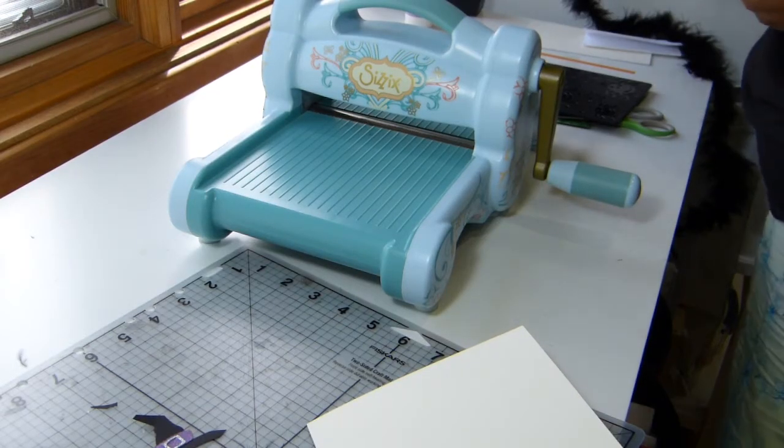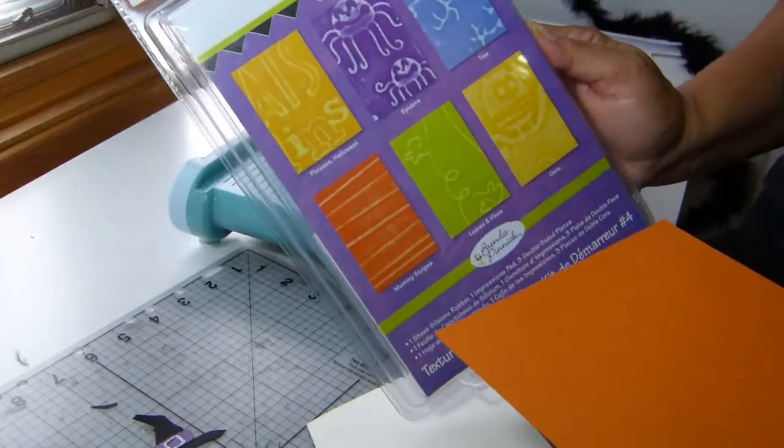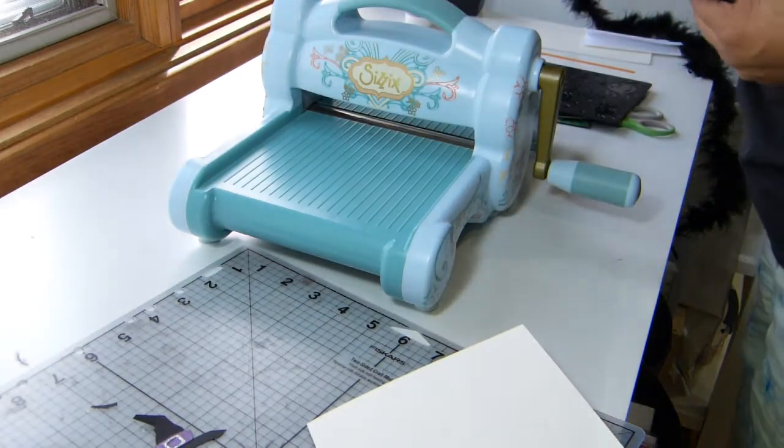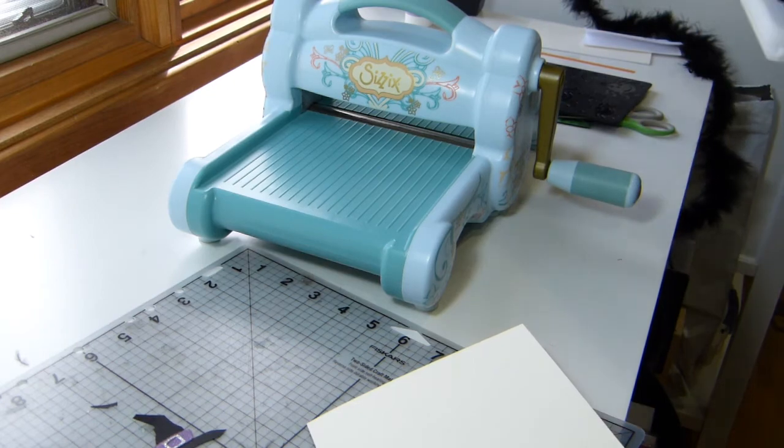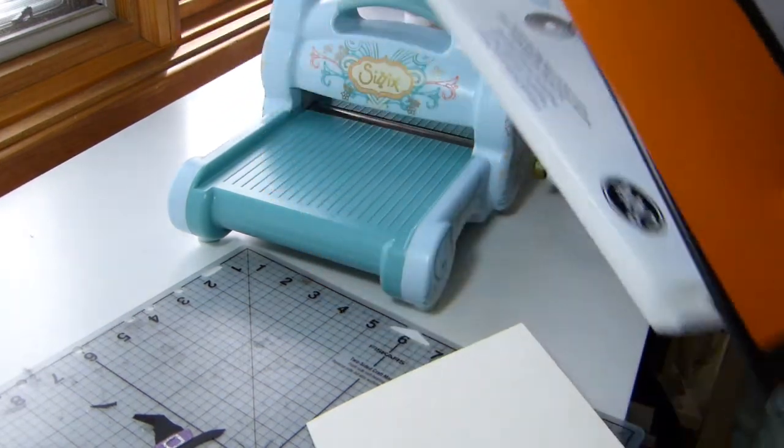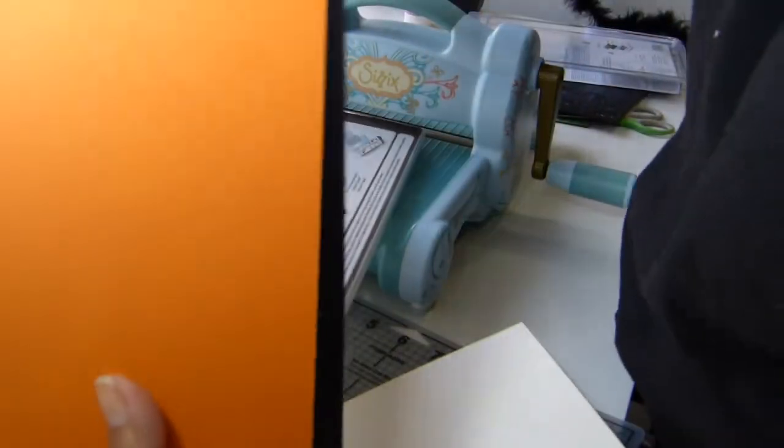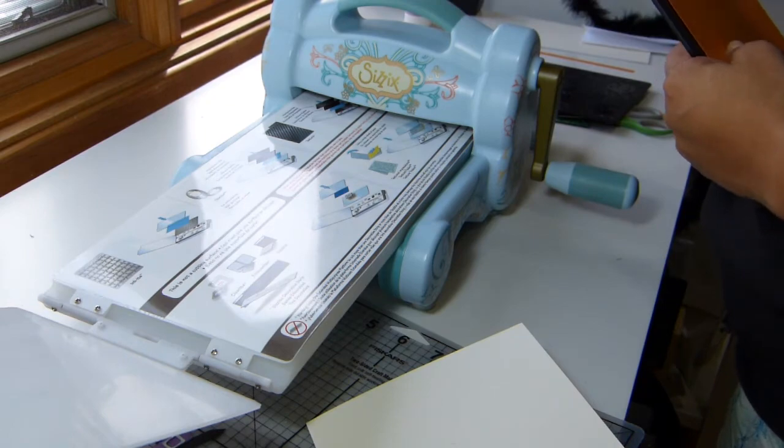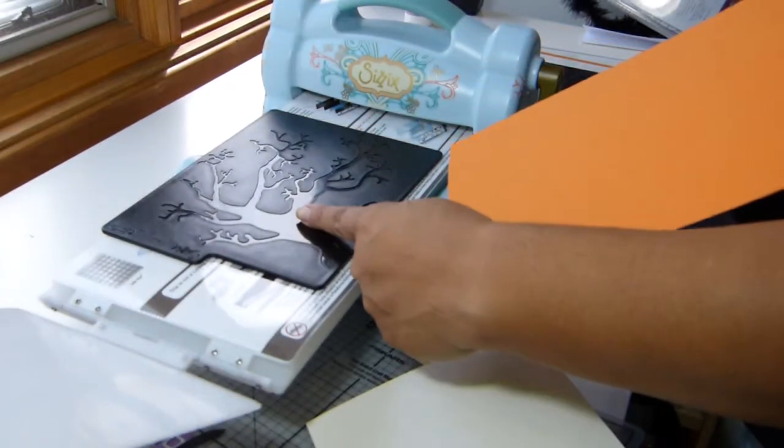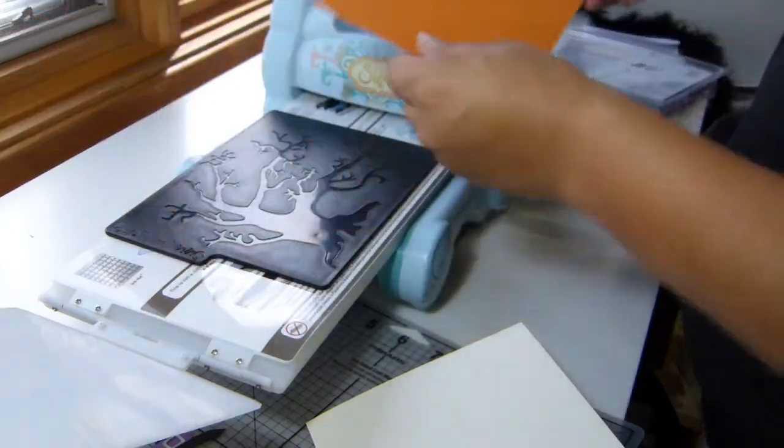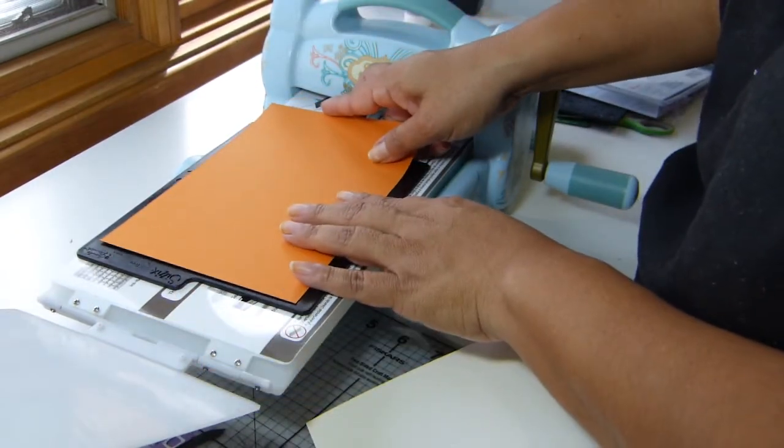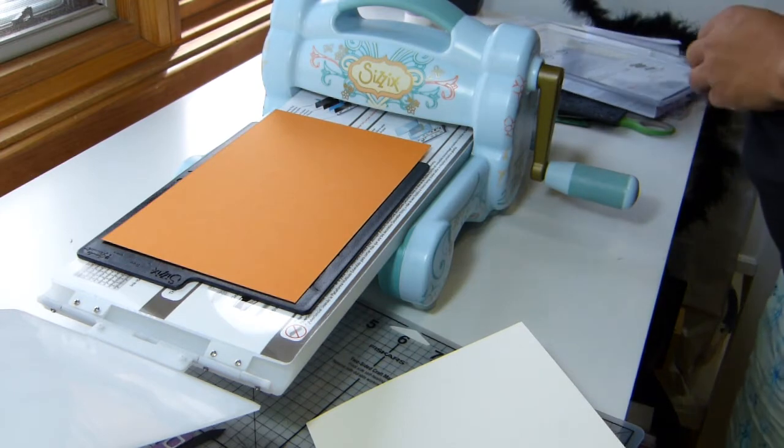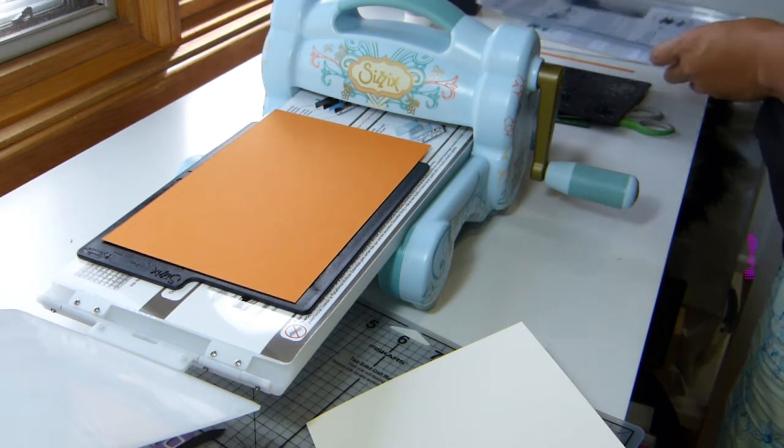Okay, so I think I'm going to emboss it. I found this Cuttlebug set that I had and it has all these backgrounds. I'm going to use the tree here. This is the first time I've done this so let's hope I do it okay. I have to read the instructions. I'm supposed to do it on tab 1. And then I'm supposed to put the texture plate, which is that one. And then I'm supposed to put the paper.